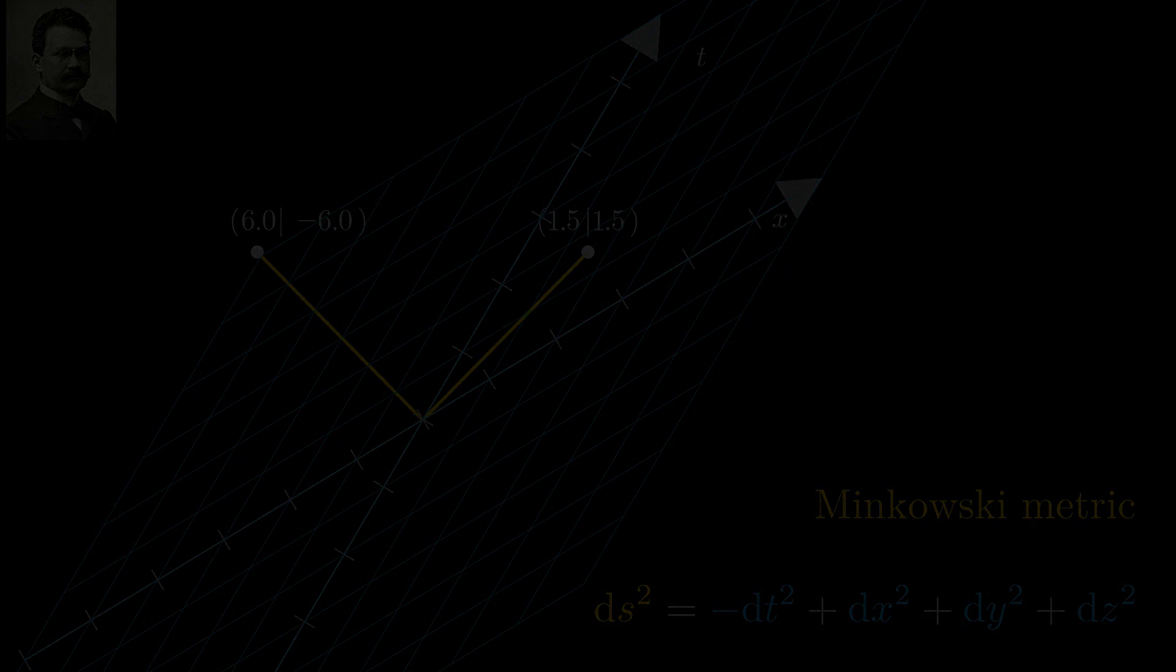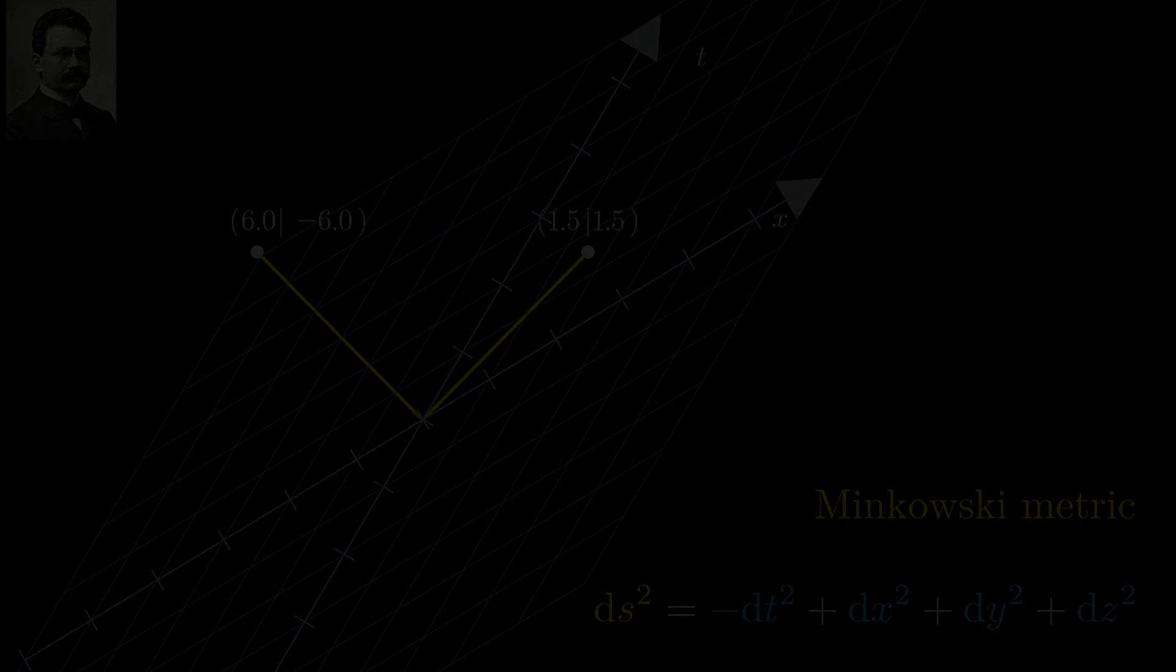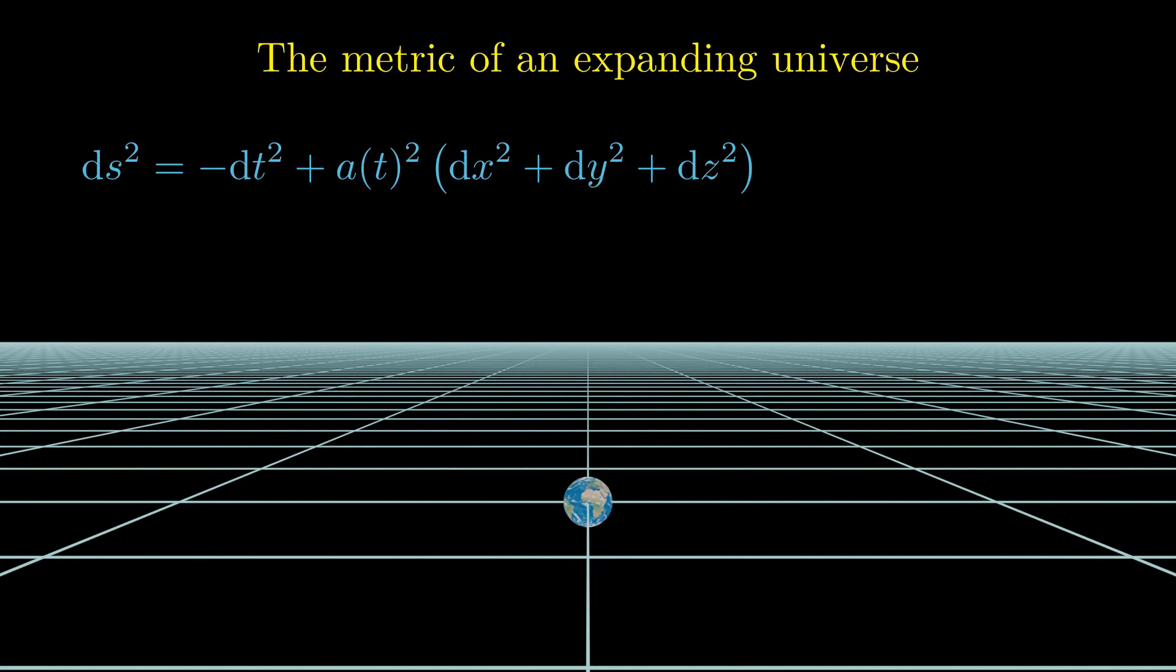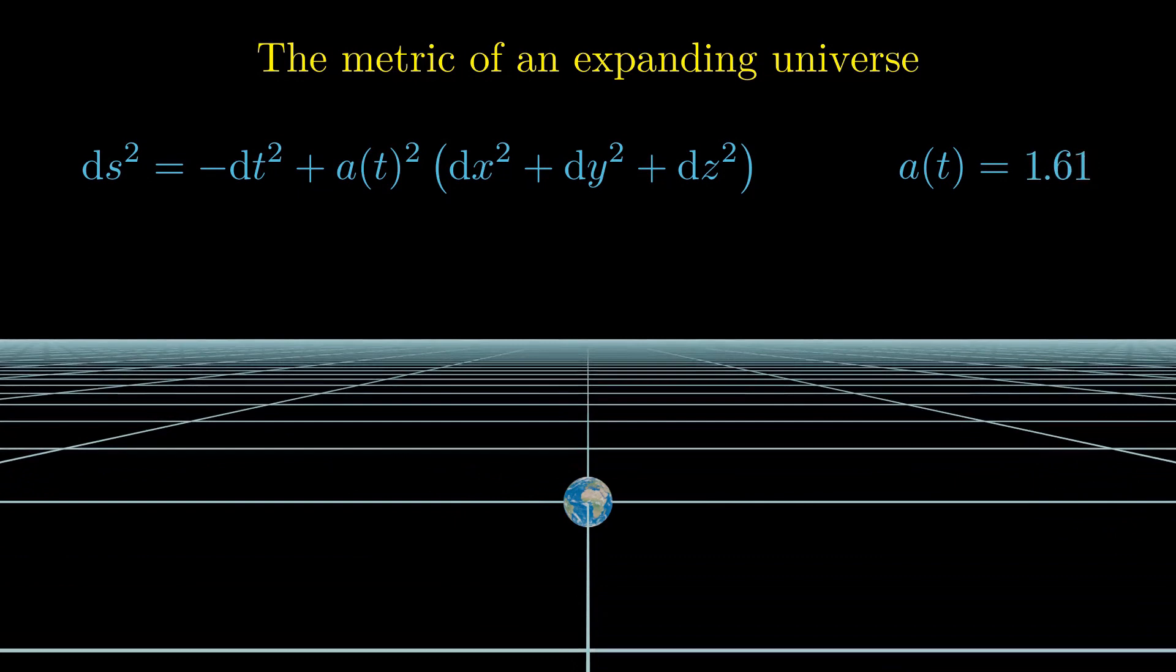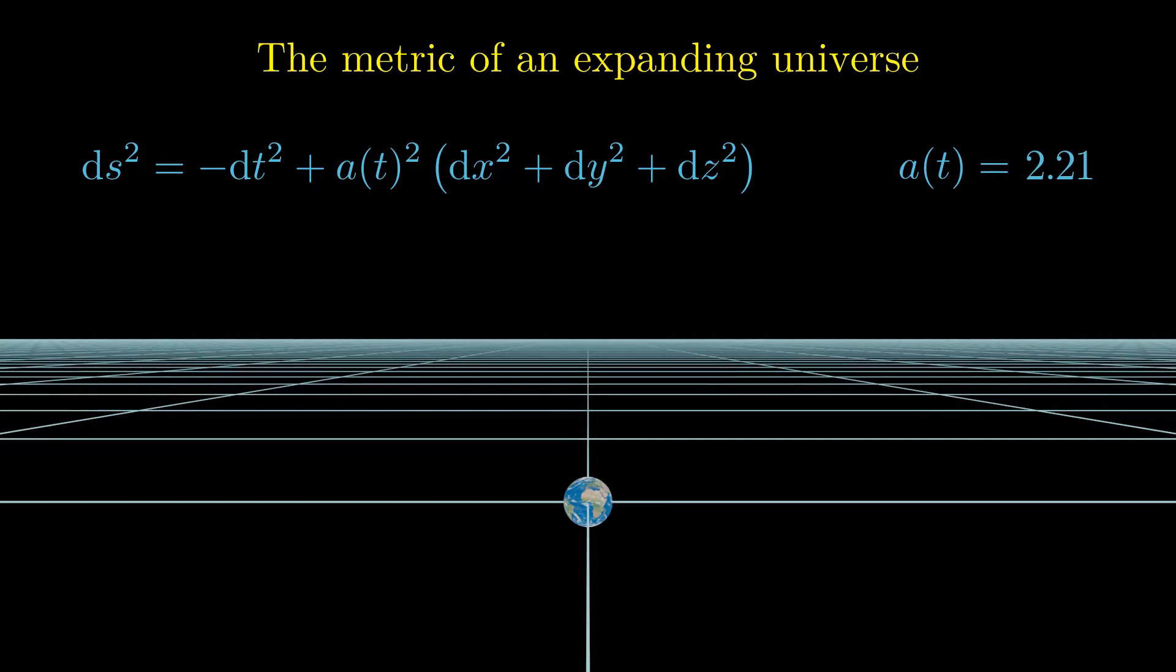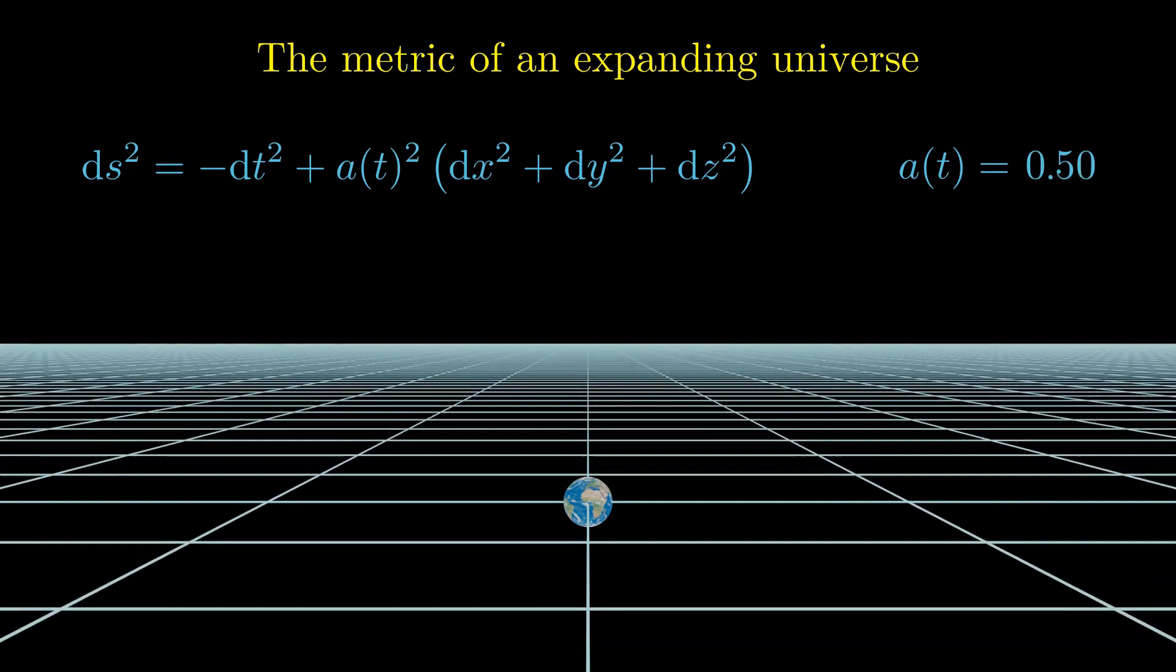The final generalization sets the stage for an expanding universe. The spatial components of the metric are multiplied with a scale factor that can arbitrarily depend on time. This function of time describes the expansion of the universe. Once it is known, we can find out when the universe was born at a equal to zero and we can understand what the fate of the universe will be.